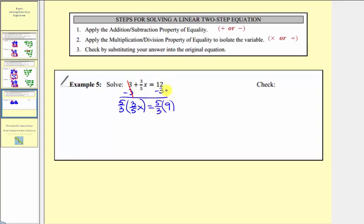On the right side, we write nine as 9/1. Before multiplying, notice there's a common factor of three between three and nine. After simplifying and multiplying, we get 15/1, which is 15. So our solution is x = 15.